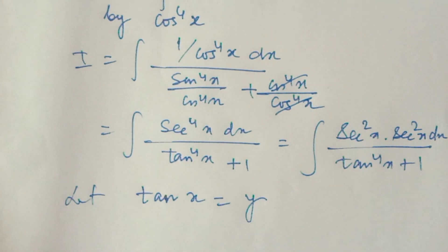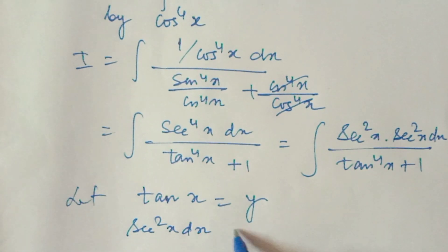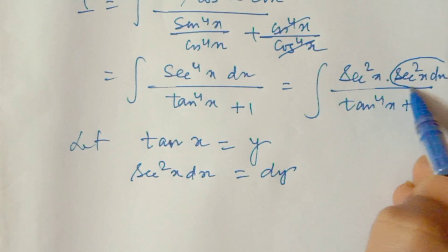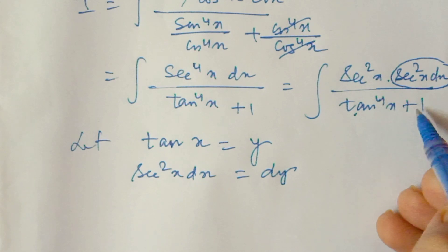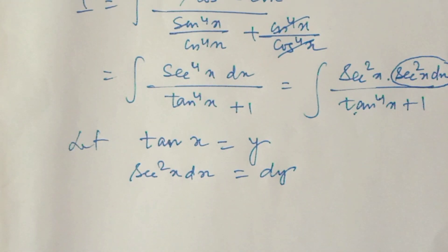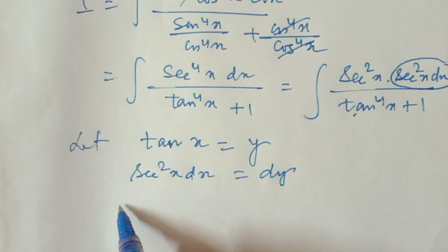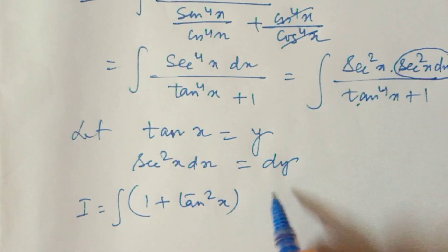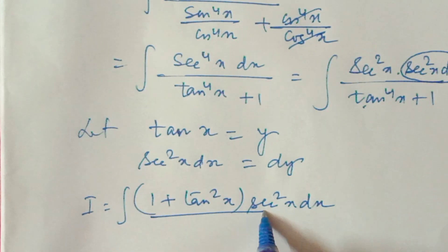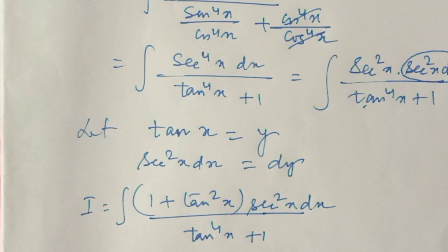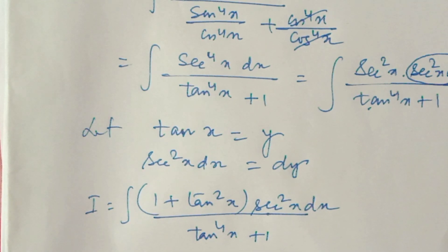Let y equal tan x. Then sec squared x dx equals dy. So sec squared x is 1 plus tan squared x, which equals 1 plus y squared. The integral now becomes the integral of 1 plus y squared dy divided by y to the power 4 plus 1.